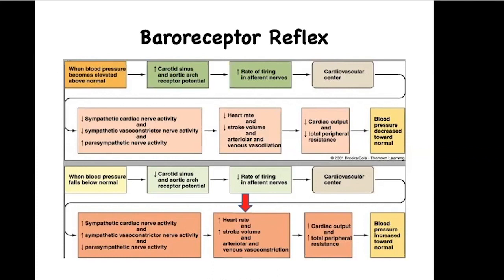Lastly, you're going to have vasoconstriction of your arteries and your veins. When heart rate and stroke volume go up, cardiac output increases. When you have vasoconstriction, total peripheral resistance increases, and this is going to lead to an increase in blood pressure, returning it back to normal.